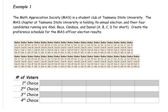On the first ballot, this voter preferred candidate A as their first choice, B as their second, C as their third, and D as their fourth. On the next ballot, this voter preferred candidate B first, D second, C third, and A fourth.